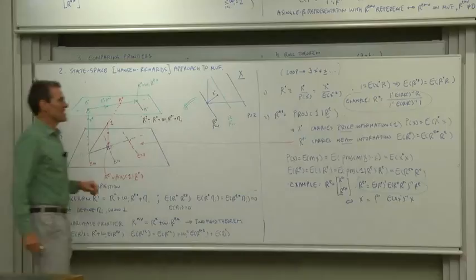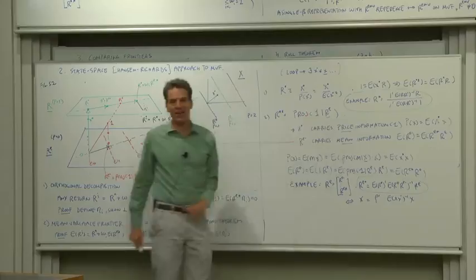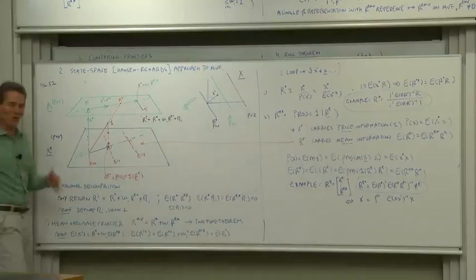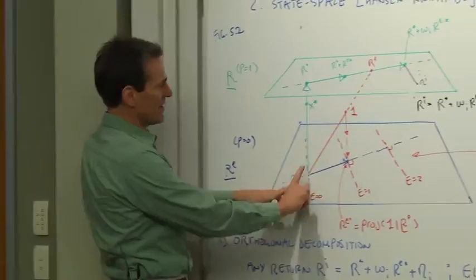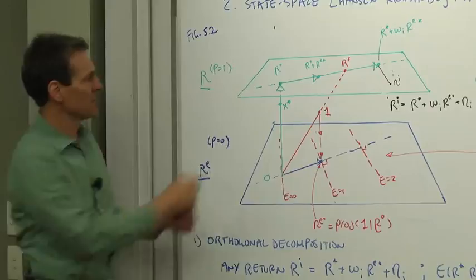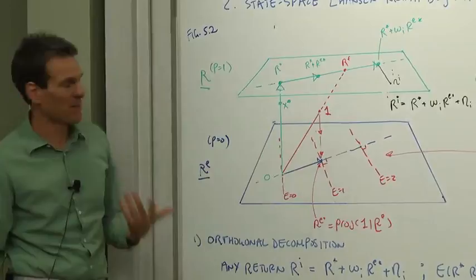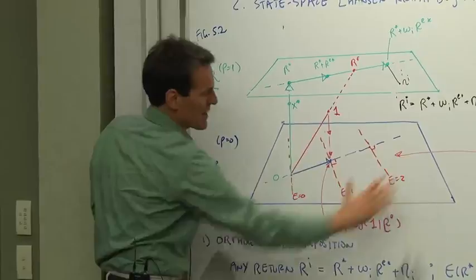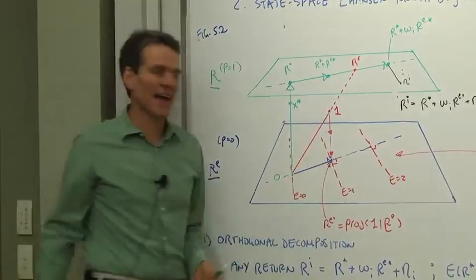The second ingredient is a little more novel, r e star, the projection of one on the space of excess returns. This takes a little more to digest, but it's a beautiful quantity once you see it. So geometrically, what are we doing? Here is x star. Here is one, a payoff that is one in all states of nature. And if you extend that, it becomes the risk-free rate, a payoff r f in all states of nature. r e star is simply the projection of one onto the space of excess returns, as claimed.